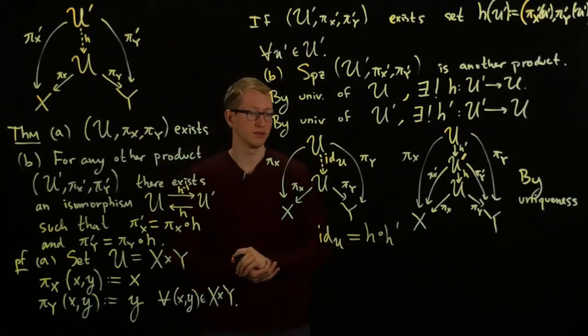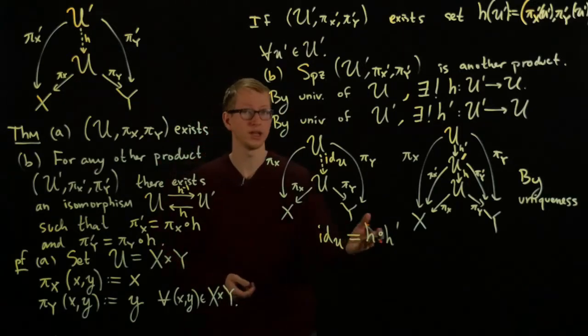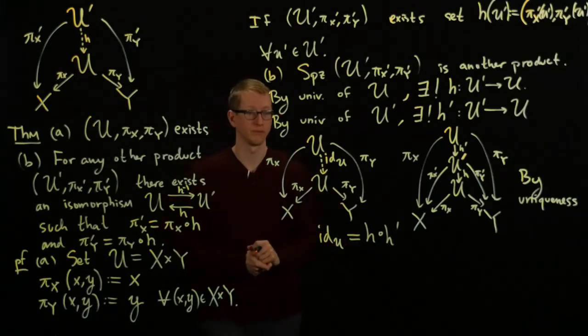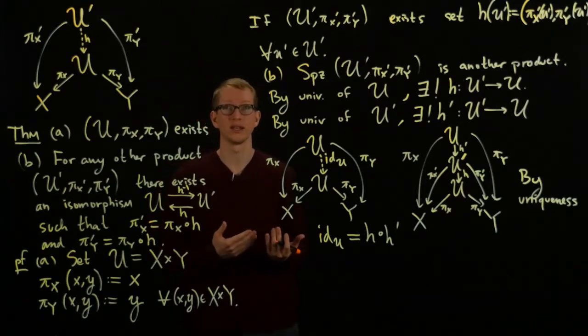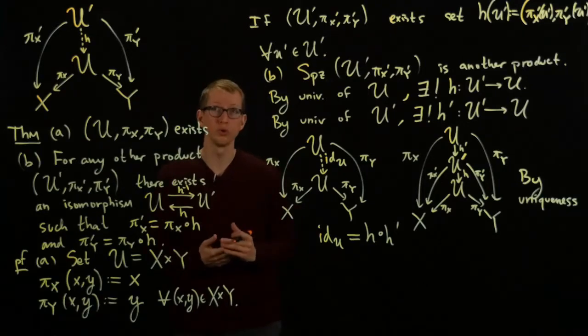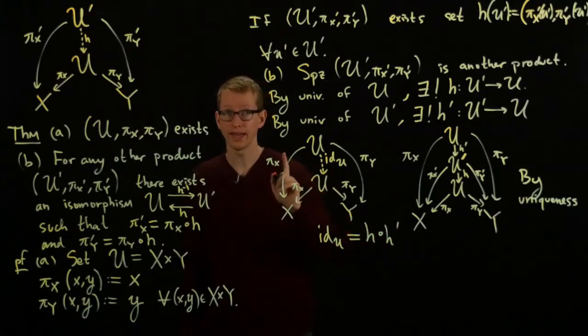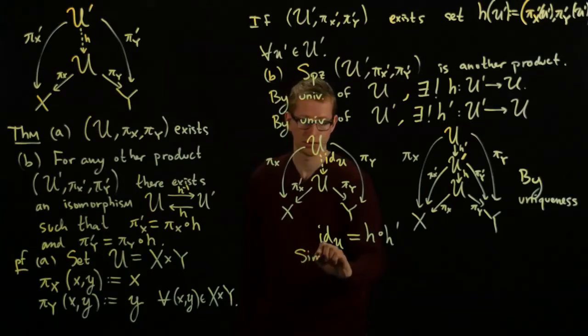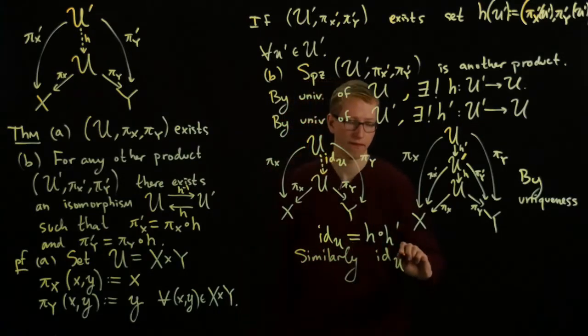which is precisely the definition of what it means for H and H prime to be inverses of each other. If you're not familiar with that and you're familiar with the definition that it's a bijection, you should prove that H is a bijection if and only if there exists an H prime such that this is true and such that this is true.